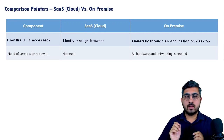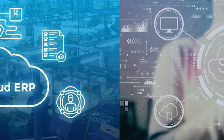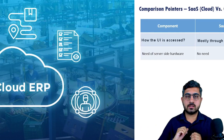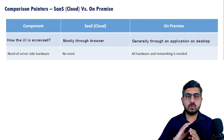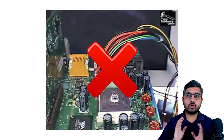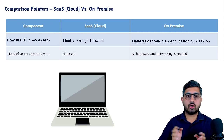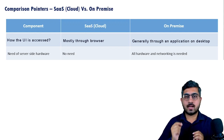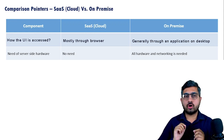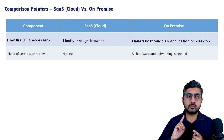The second comparison point is the need for server-side hardware. In case of a SaaS or cloud-based application, there is absolutely no need for the customer to purchase or invest in any server-side hardware. All they need is a laptop or desktop to access the client-side or front-end. On the other hand, for on-premise software, there is a heavy investment needed in terms of servers, networking equipment, and so on.